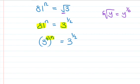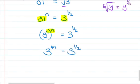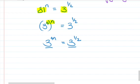Applying laws of indices — when you have a bracket with a power, you multiply the powers. So 3 to the power 4n is equal to 3 to the power half. The bases are equal, so we equate the powers: 4n is equal to half.